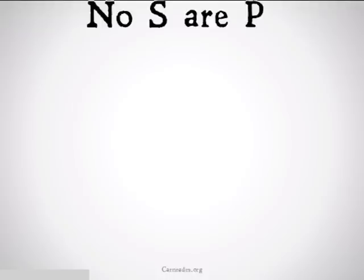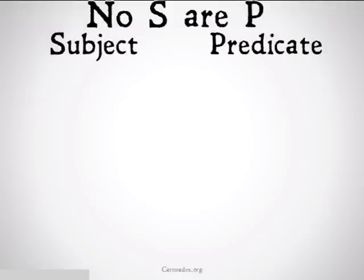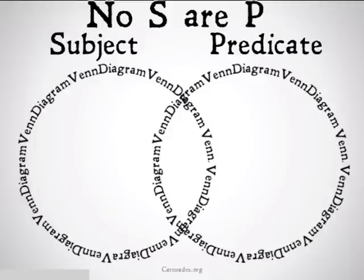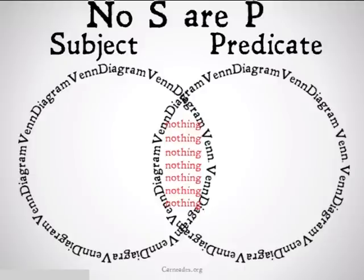E statements go as follows: no S are P. We're going to use a Venn diagram to represent this, with one side being the subject and the other side being the predicate. We draw our Venn diagram and then shade in the center area, where you have things that are both S and P, because all the statement is saying is that there are no things that are both S and P. So we shade that area in to show that there's nothing there.